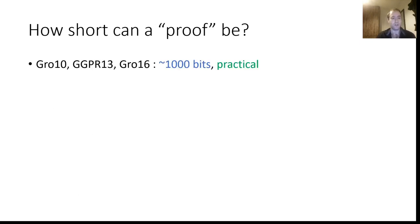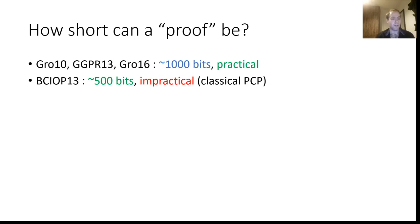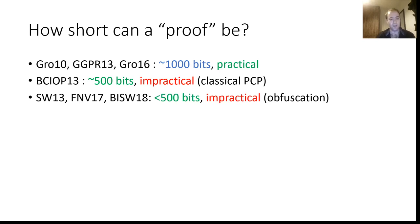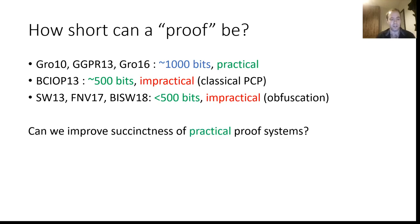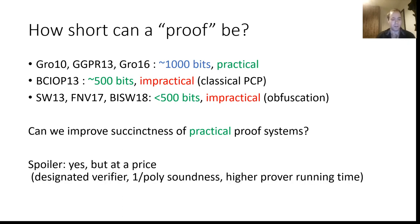How short can a proof be? There is already a line of work initiated by Gros 2010, then by Gennaro et al., then Gros 16 with 1,000 bits, which is highly practical. For the less-than-1,000-bits regime, there is one construction by Bitansky et al. with 500 bits, but it's impractical as it relies on classical PCP. So can we improve the succinctness of practical proof systems, meaning building practical proof systems with less than 1,000 bits proof length? It turns out we can, but at a price: we end with a designated verifier argument, non-negligible soundness, and higher prover running time.